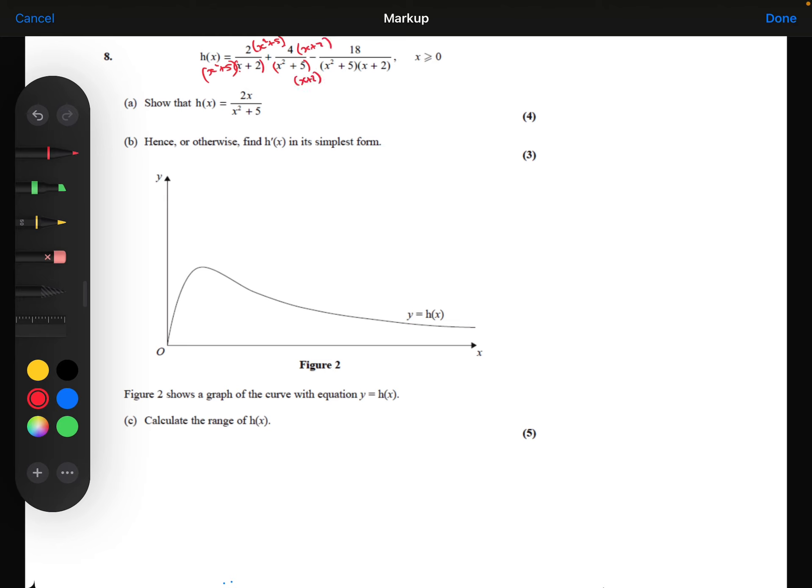And the third fraction, I'm going to leave completely alone because I can see that it has already got the same common denominator as my first two fractions. So we've got a common denominator of x squared plus 5 times x plus 2.